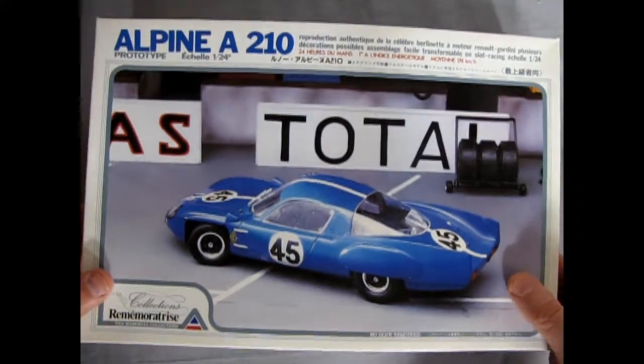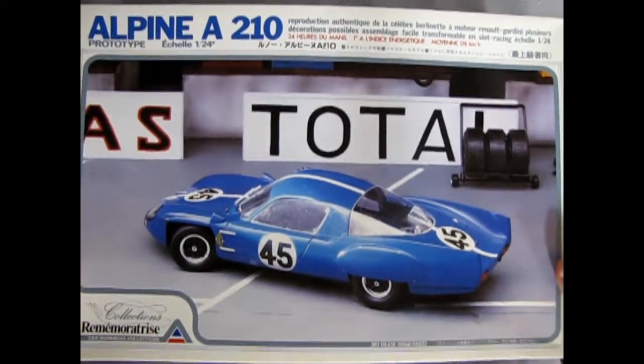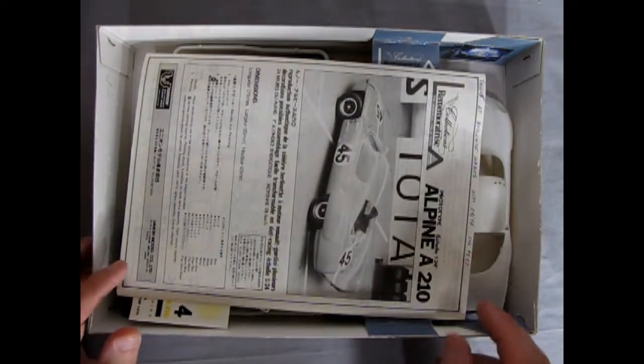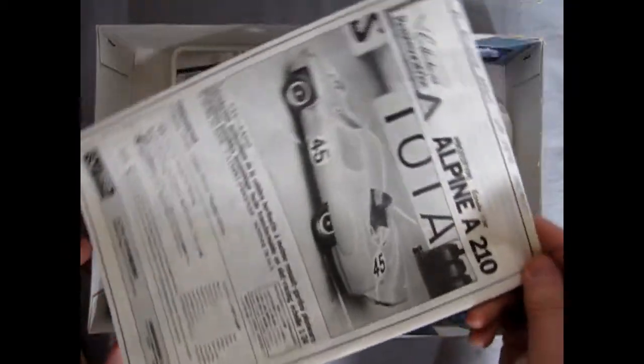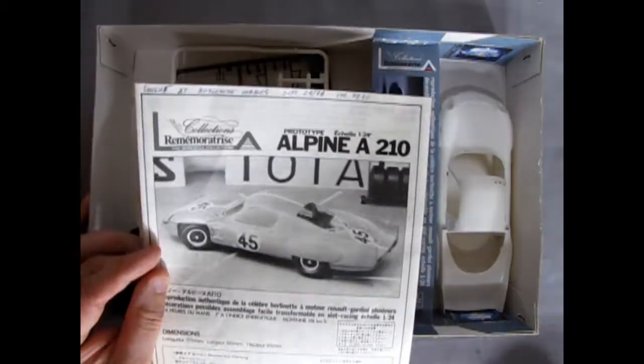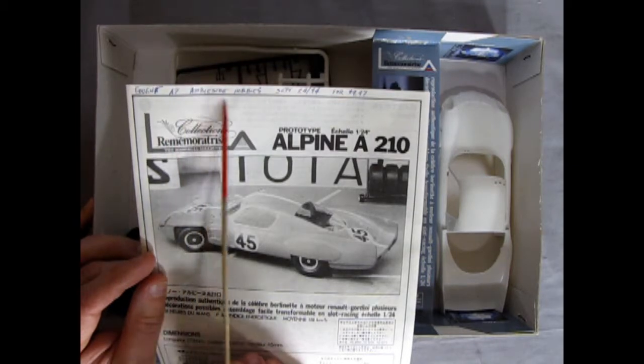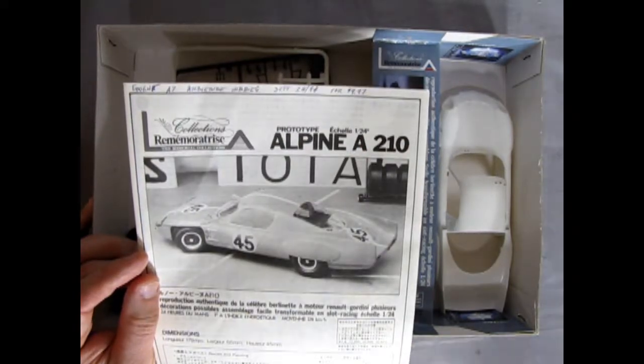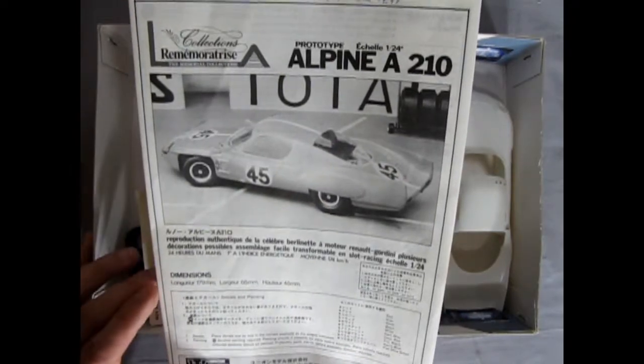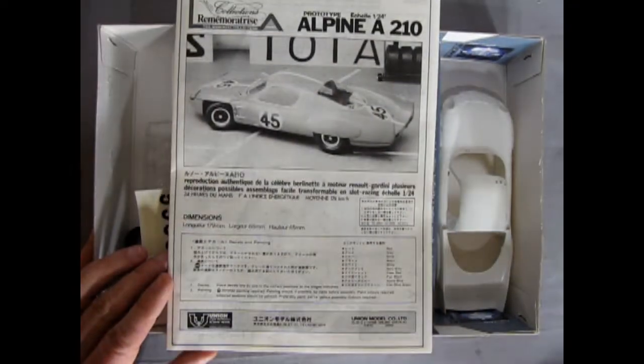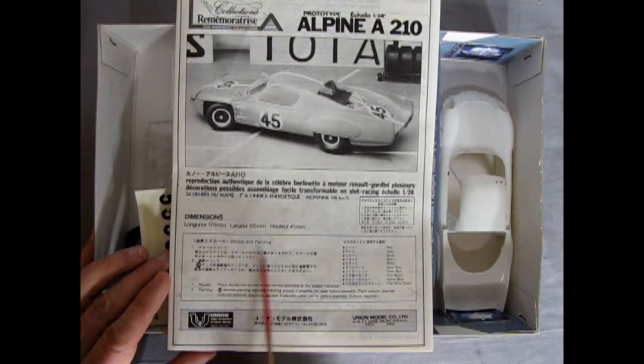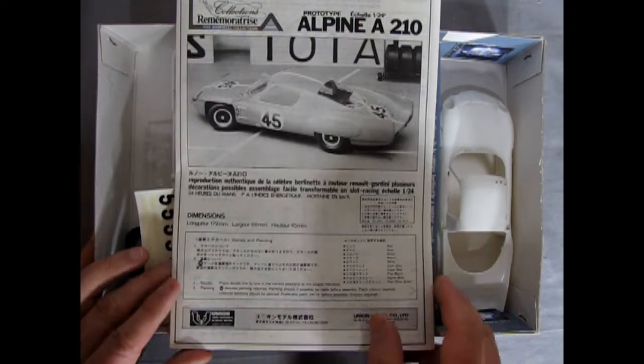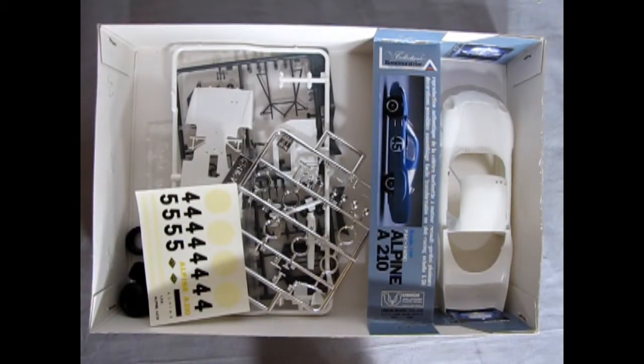We can take the box top off. This is quite a long, low box compared to our American-style AMT Revell monogram-style tall and short boxes. Here we get this amazing instruction sheet. I bought this from a hobby shop that no longer exists, Ambleside Hobbies, September 24th, 1994, for $9.97. Now I can imagine this model kit would be about $30 to $45 Canadian.